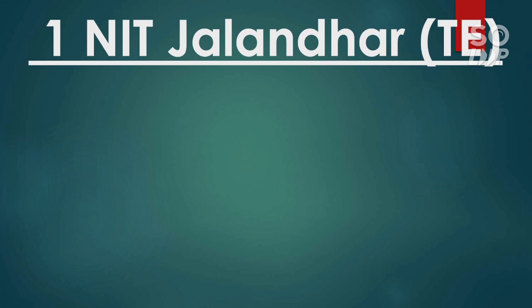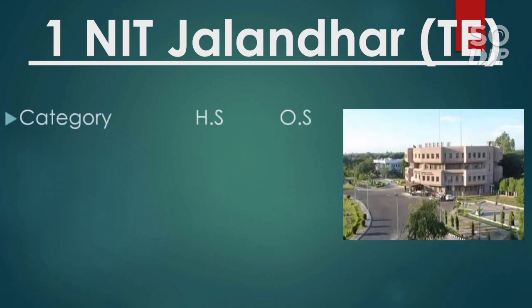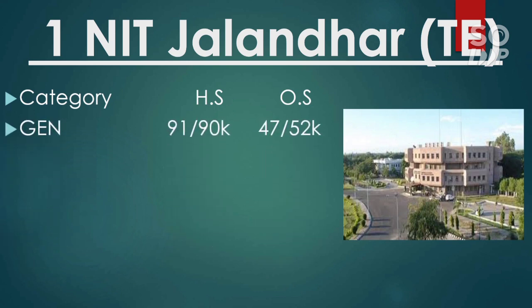The first NIT in this category is NIT Jalandhar. Textile Engineering has the lowest cutoff among all branches of NIT Jalandhar. For General home state, the cutoff rank is 91,000 and 90,000 for male and female. For other state General, it is 47,000 and 52,000 for male and female respectively.